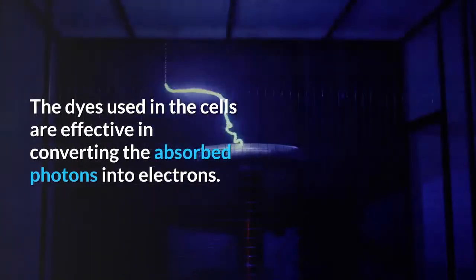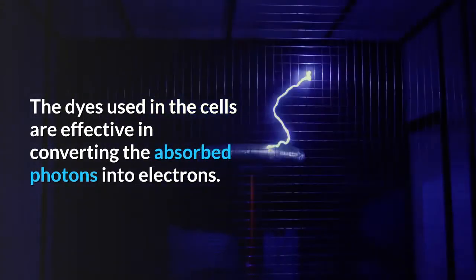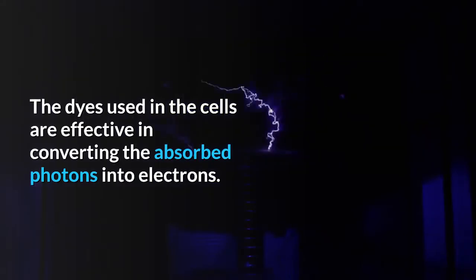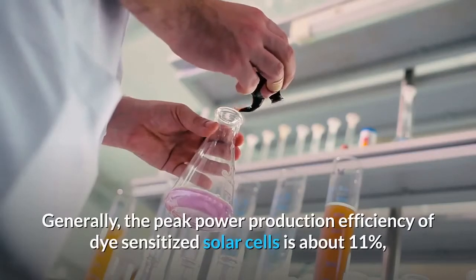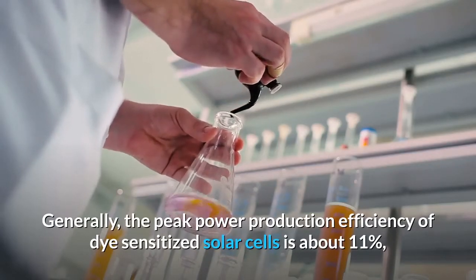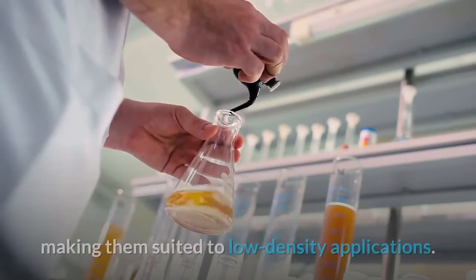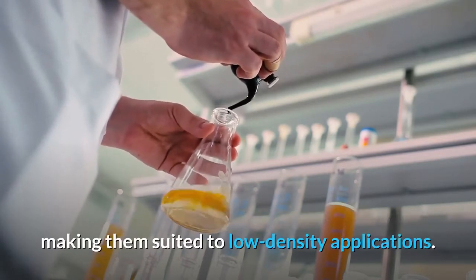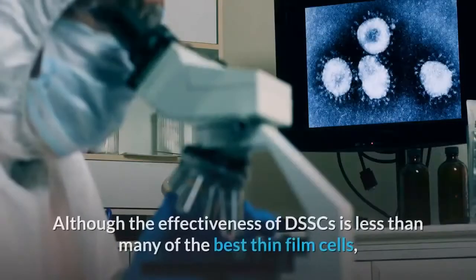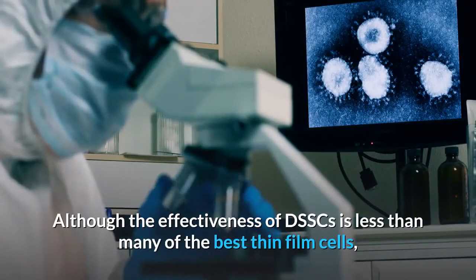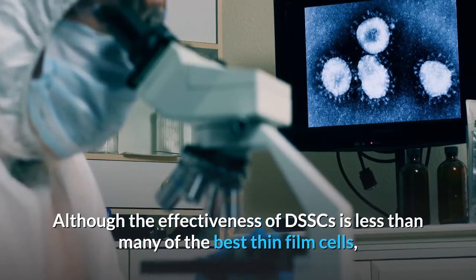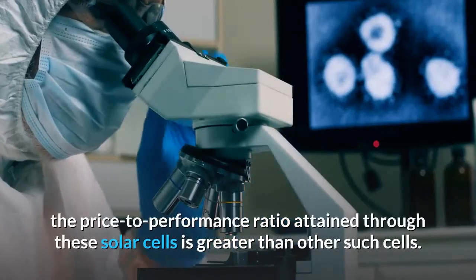The dyes used in the cells are effective in converting the absorbed photons into electrons. Generally, the peak power production efficiency of dye sensitized solar cells is about 11%, making them suited to low density applications. Although the effectiveness of DSSCs is less than many of the best thin film cells, the price-to-performance ratio attained through these solar cells is greater than other such cells.